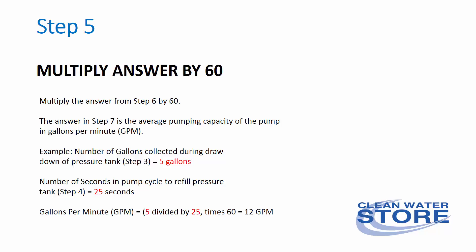For example, say you collected 5 gallons in your drawdown and you had 25 seconds for the well to refill your pressure tank. 5 divided by 25, times 60, equals 12 — which means you have approximately 12 gallons per minute.